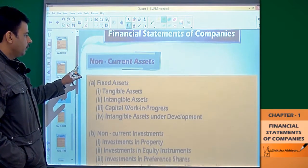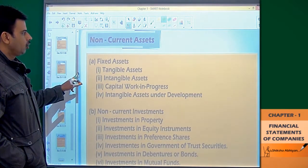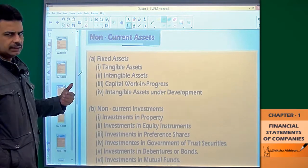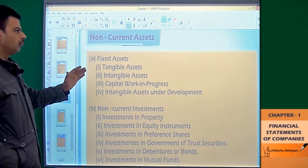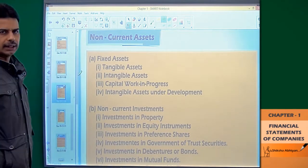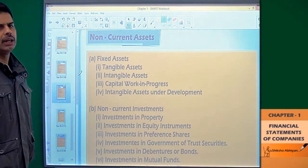Now we have reached the asset side. First of all, the non-current assets, which we have known as fixed assets. Now they have the name of non-current assets, which are not current.